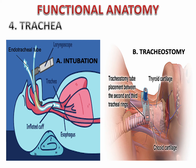Air entering the trachea from the larynx travels down its length — usually 10 to 12 centimeters or about 4 inches — until the level of the 5th thoracic vertebra, approximately the middle of the chest. In cases of increased oxygen needs or respiratory distress, intervention options include intubation — inserting an endotracheal tube from the mouth down through the trachea using a laryngoscope — or tracheostomy, which involves making an artificial opening below the thyroid cartilage within the cricoid cartilage area.